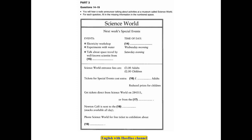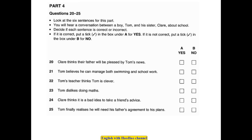That is the end of Part 3. Now turn to Part 4, questions 20 to 25. Look at the six sentences for this part. You will hear a conversation between a boy, Tom, and his sister, Claire, about school. Decide if each sentence is correct or incorrect. If it is correct, put a tick in the box under A for yes. If it is not correct, put a tick in the box under B for no. You now have 20 seconds to look at the questions for Part 4.